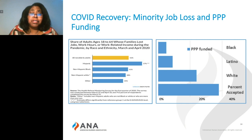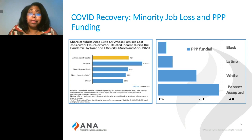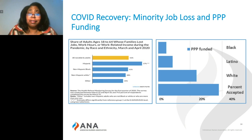We also see these disparities in those who've been approved for PPP funding for small businesses as part of that recovery from COVID. We see that of the percent that had been accepted, over 25% of those PPP loans were given to businesses that were white, 15% that were Latino, and only 5% that were Black. So that wealth gap and ability to regain financially even after COVID-19 shows a disparity with African American populations.